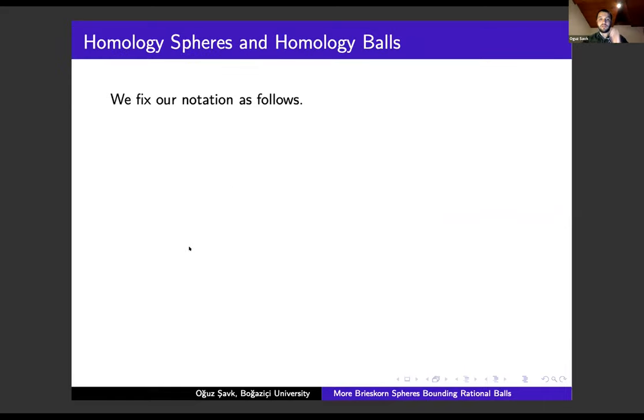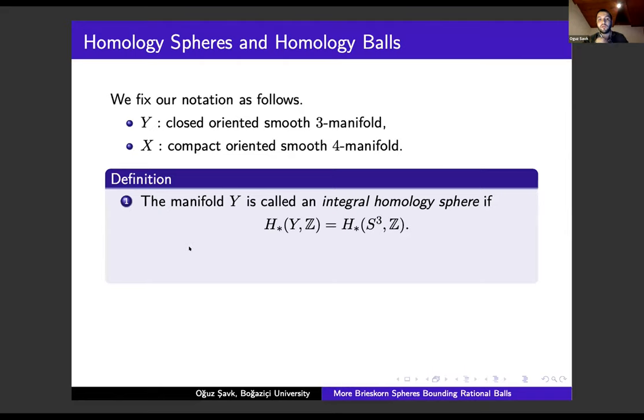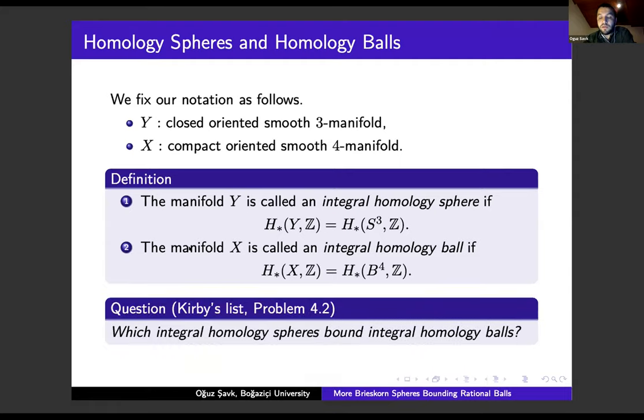We start by fixing our notations. For us, Y means a closed oriented smooth 3-manifold and X is a compact oriented smooth 4-manifold. This is our first definition: Y is called an integral homology sphere if it has the same integral homology as the three-dimensional sphere. The notion of an integral homology ball can be similarly defined. Since the three-dimensional sphere bounds the four-dimensional ball, we naturally ask the homology analog of this question.